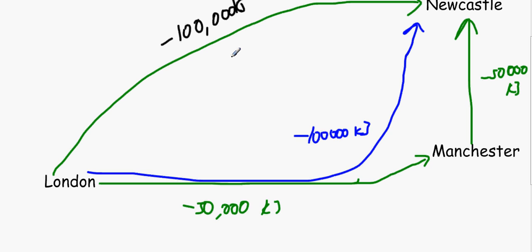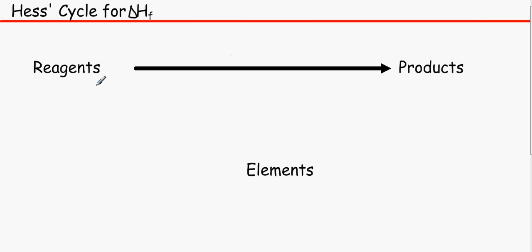Now let's put this into a chemical practice. So let's say we have the reagents and we have the products, and we know how much energy is needed to form the reagents from its constituent elements, and we know how much energy is needed to form the products from its elements.